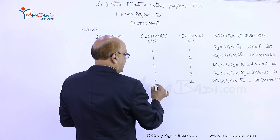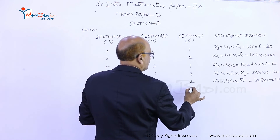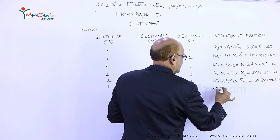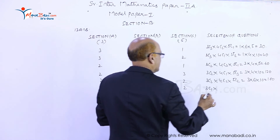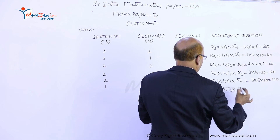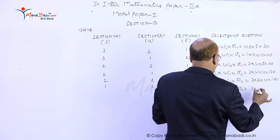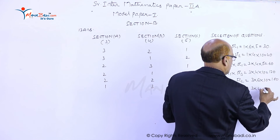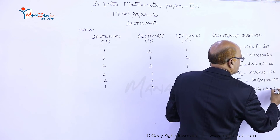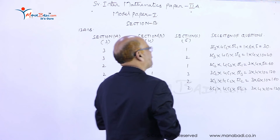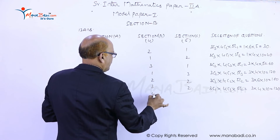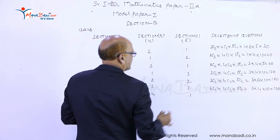Next: one question from section A, three questions from section B, and two questions from section C. Out of three we select only one: 3C1 into 4C3 into 5C2. 3C1 is 3, 4C3 is 4, and 5C2 is 10, giving 40 into 3 equals 120.